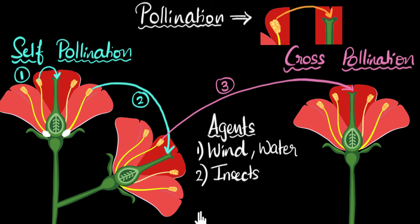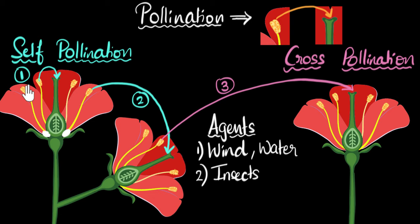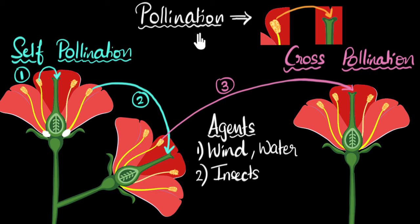To summarize: pollination is the transfer of pollen grains from the anther — the top part of the male — to the stigma, the top part of the female organ. This can happen in two ways: self-pollination, which occurs within the same plant either within one flower or between two flowers of the same plant; and cross-pollination, which occurs between two different plants. The agents that cause pollination include wind, water, and certain insects like bees.